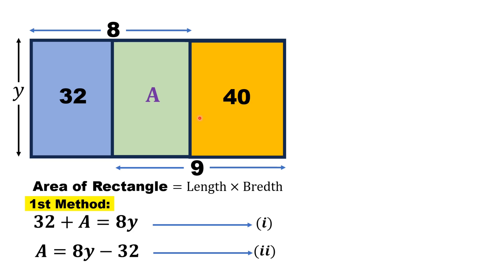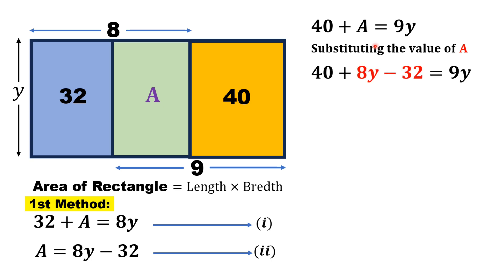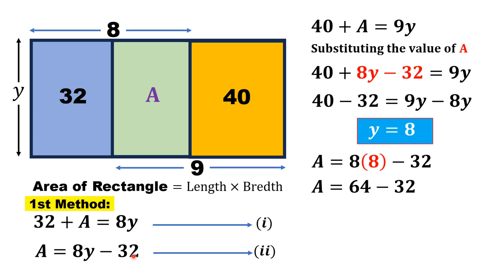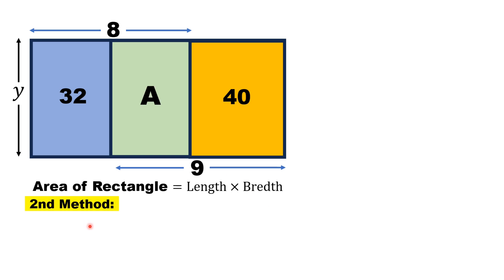Now taking the green and yellow rectangles into account, the length is 9 units, width is y units, and area is A + 40. So: 40 + A = 9y. Substituting the value of A from equation 2: 40 + 8y − 32 = 9y, which gives 40 − 32 = 9y − 8y, so y = 8 units. Substituting back into equation 2: A = 8×8 − 32 = 64 − 32 = 32. Thus the area of the green region is 32 square units.